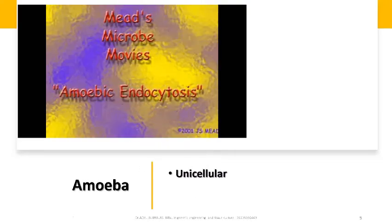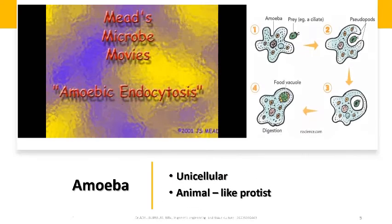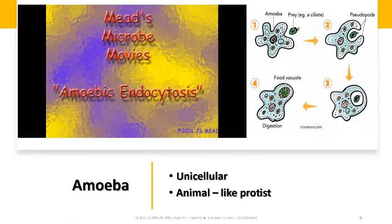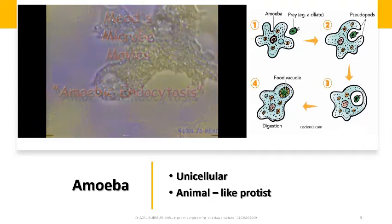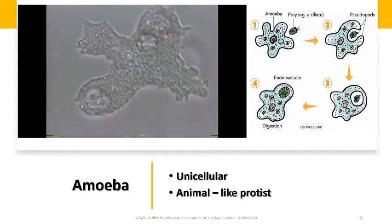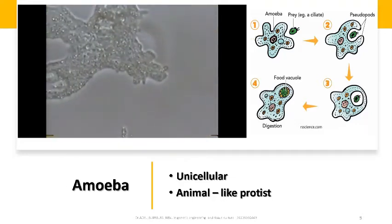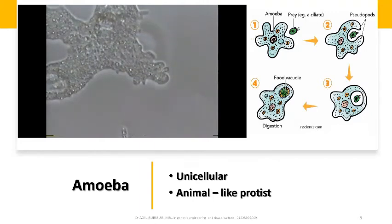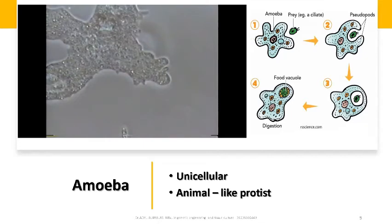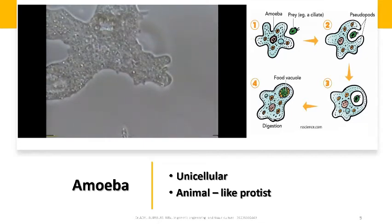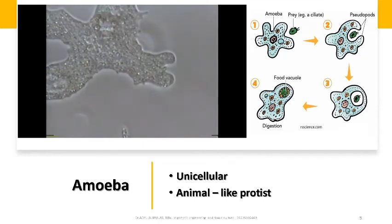Amoeba is a unicellular animal-like protist. It feeds by ingesting organic matter found in its medium or by ingesting smaller organisms. Amoeba moves by forming temporary false feet called pseudopods. Using these pseudopods, it can surround its prey to form a food vacuole, then digests its food by secreting digestive enzymes.